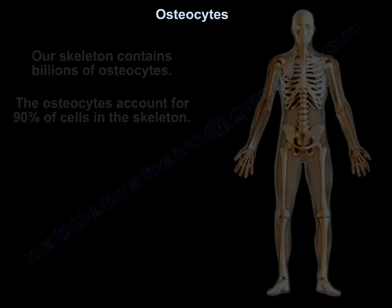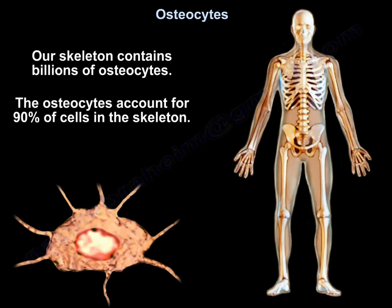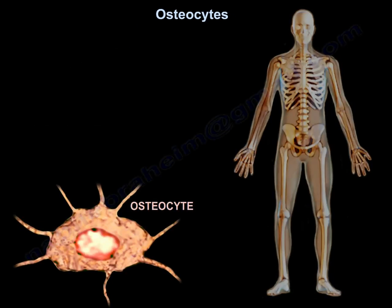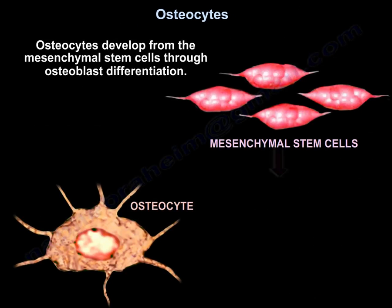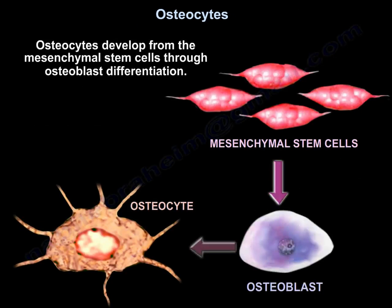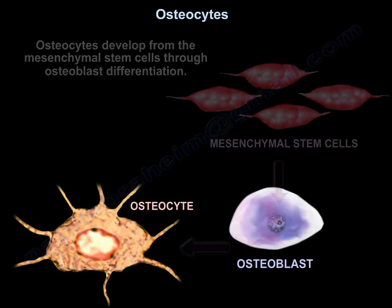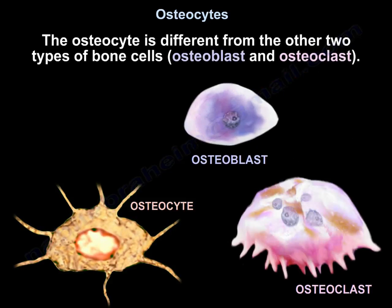Osteocytes. Our skeleton contains billions of osteocytes, which account for 90% of cells in the skeleton. The osteocyte develops from mesenchymal stem cells through osteoblast differentiation. The osteocyte is different from the other two types of bone cells: the osteoblast and the osteoclast.